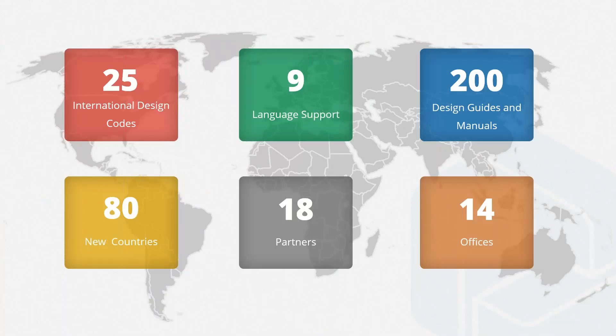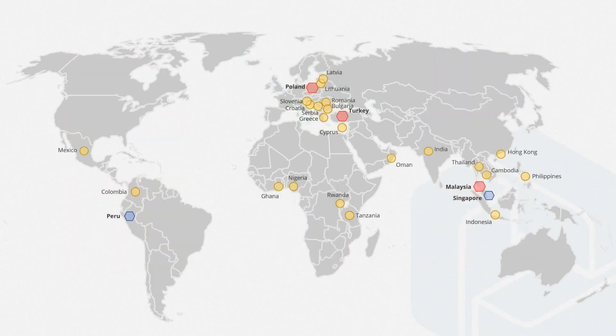We now cover 25 different international design codes, 9 language support, and we have more than 200 design guides on our website. We support 80 different countries with our partners in 14 different offices. You can see our headquarters in Poland, Turkey, and Malaysia, with other offices also located on the map.